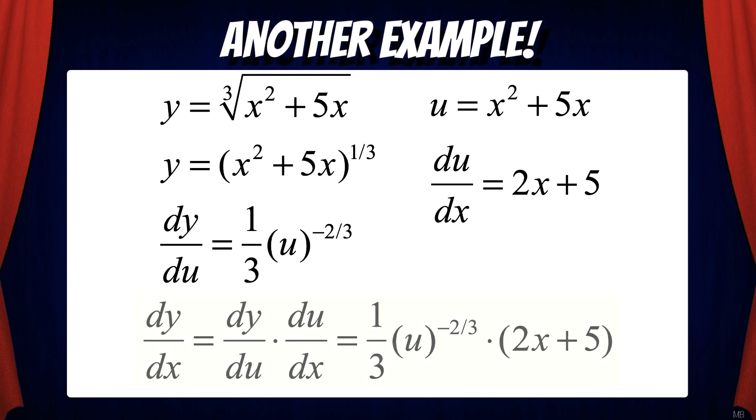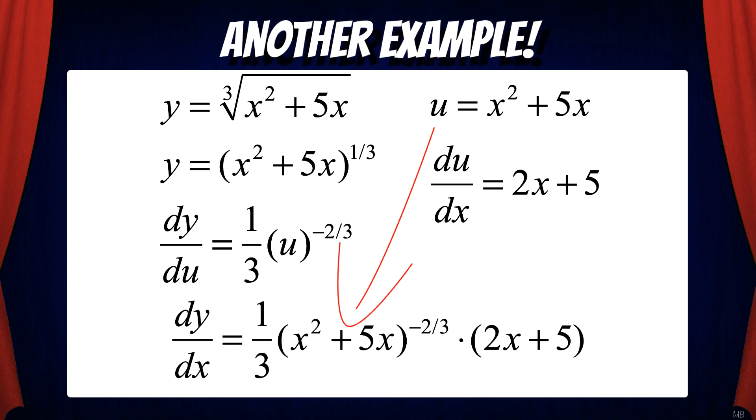Then we put the pieces together. dy/dx equals dy/du times du/dx. That would give us 1/3 u to the minus 2/3 times the quantity 2x plus 5. Now we can replace u with x squared plus 5x.